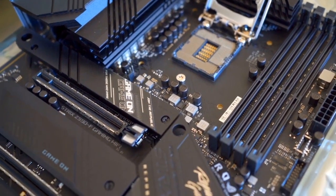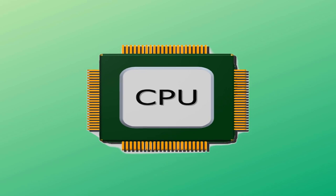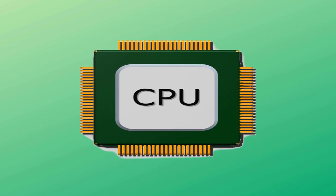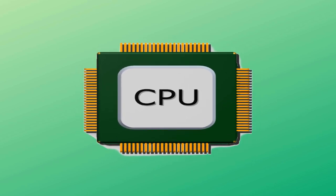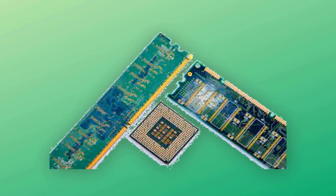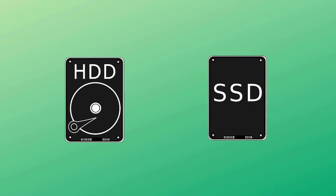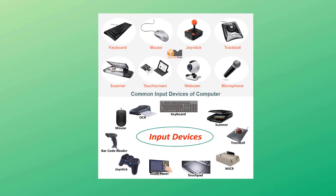Each hardware component serves a specific purpose. The CPU, often referred to as the brain of the computer, performs calculations and executes instructions. Memory modules store temporary data that the CPU needs to access quickly. Storage devices hold permanent data, including operating systems, applications, and user files. Input/output devices allow users to interact with the computer and receive information through visual or audio outputs.